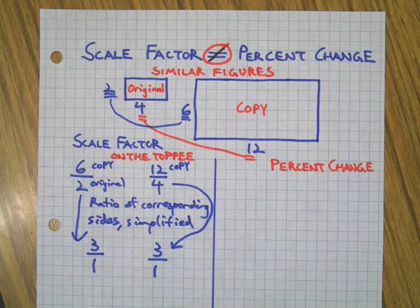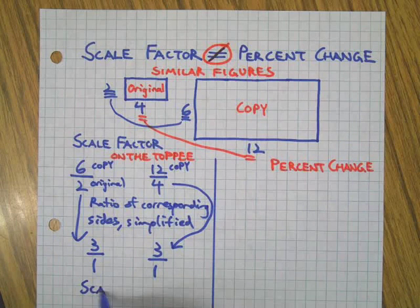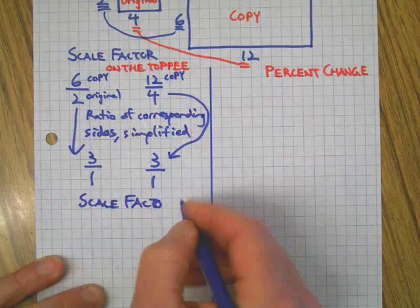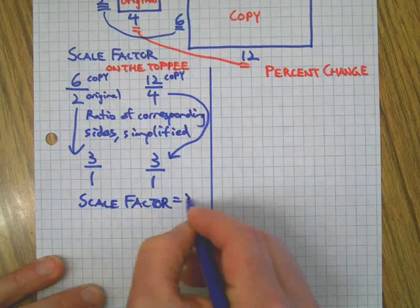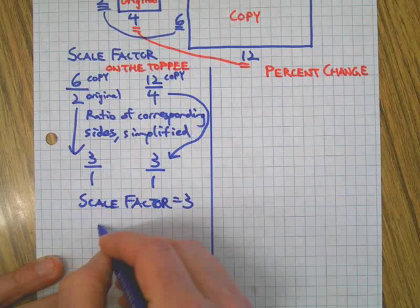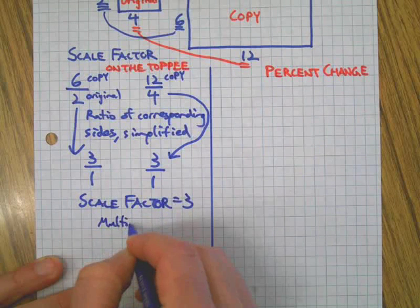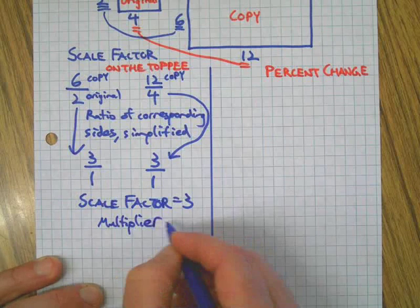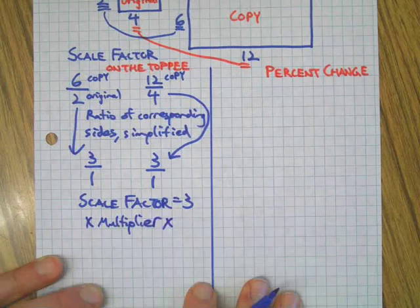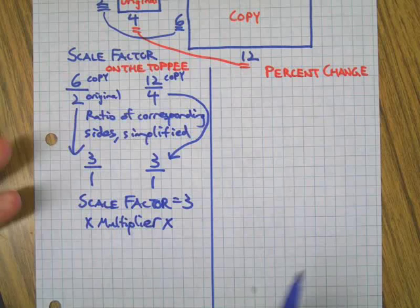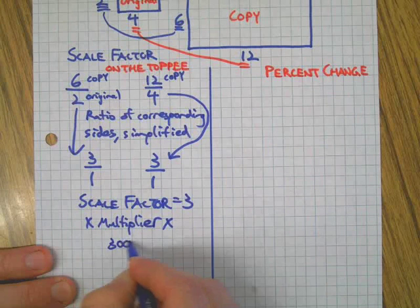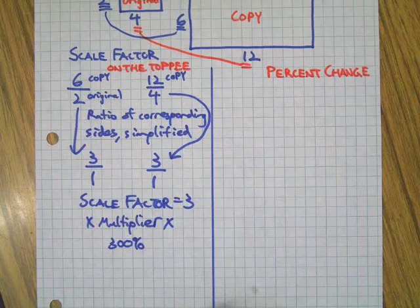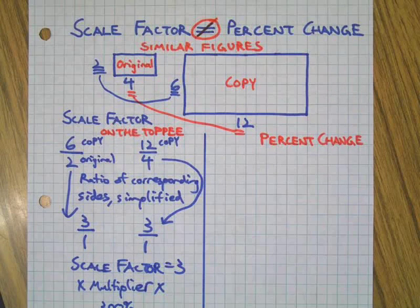Okay, 12 over 4 simplifies to 3. 6 over 2 simplifies to 3. So in this case our scale factor is 3. Whoops, there we go. Think of scale factor as the multiplier, right, the thing you multiply a side by to get a corresponding side on a similar figure. Okay, so scale factor 3. You could also think of that as 300 percent if you want to, because one is 100 percent anyway. There we go, that's a scale factor.